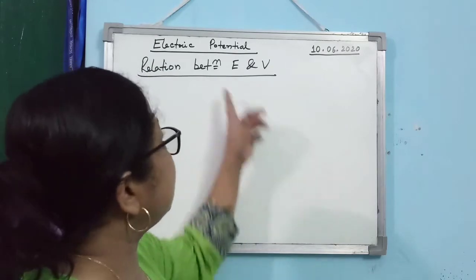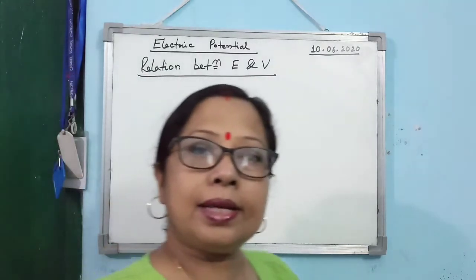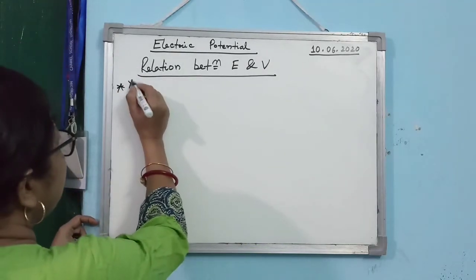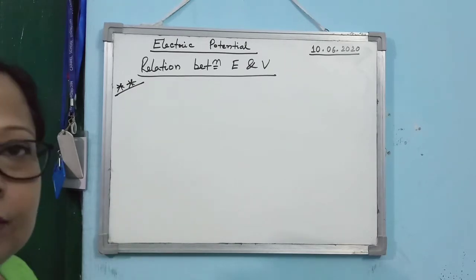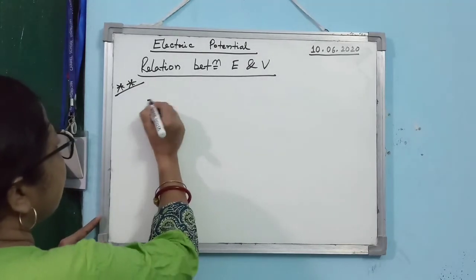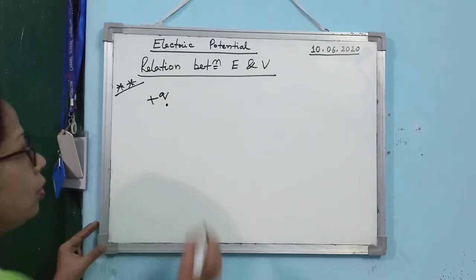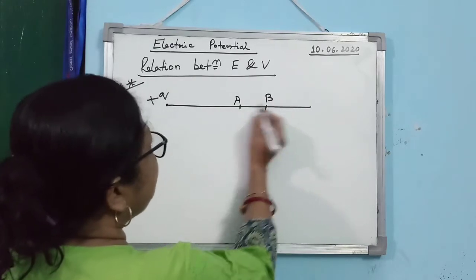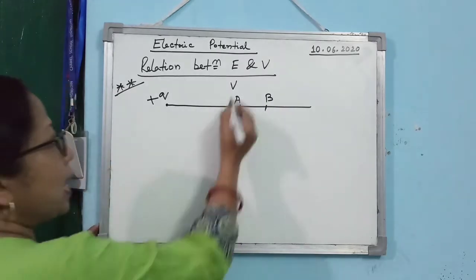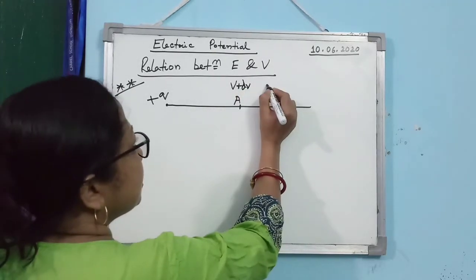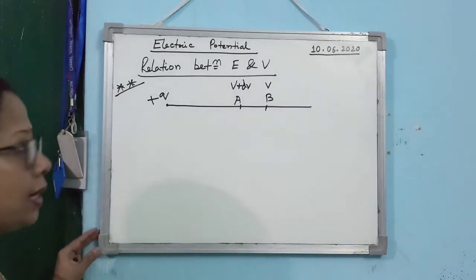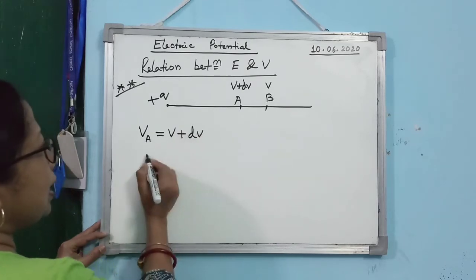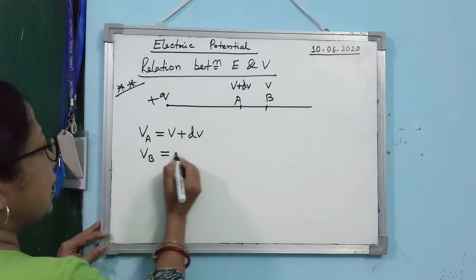Now we will find a relation between E and V. This derivation comes in board exams, so you must learn it. Let us consider a charge plus Q kept at a point. We consider potential at point A as V plus DV, and potential at point B as V. The potential difference between A and B is DV. Point A is nearer to the source charge, and since V = 1/(4πε₀) × Q/R, closer points have higher potential.